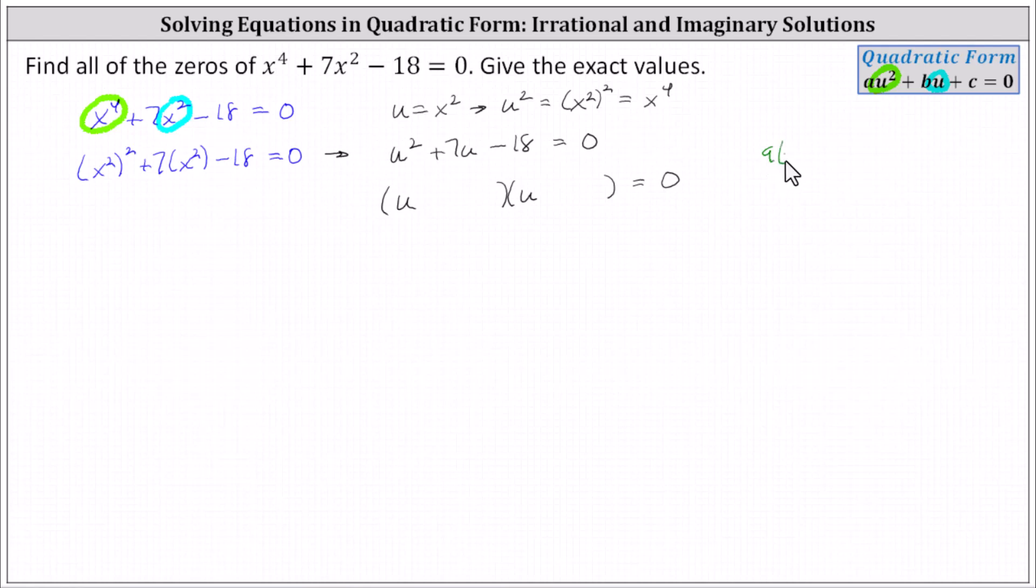And since nine times negative two equals negative 18, and nine plus negative two equals positive seven, we know one factor is u plus nine, and the second factor is u minus two.